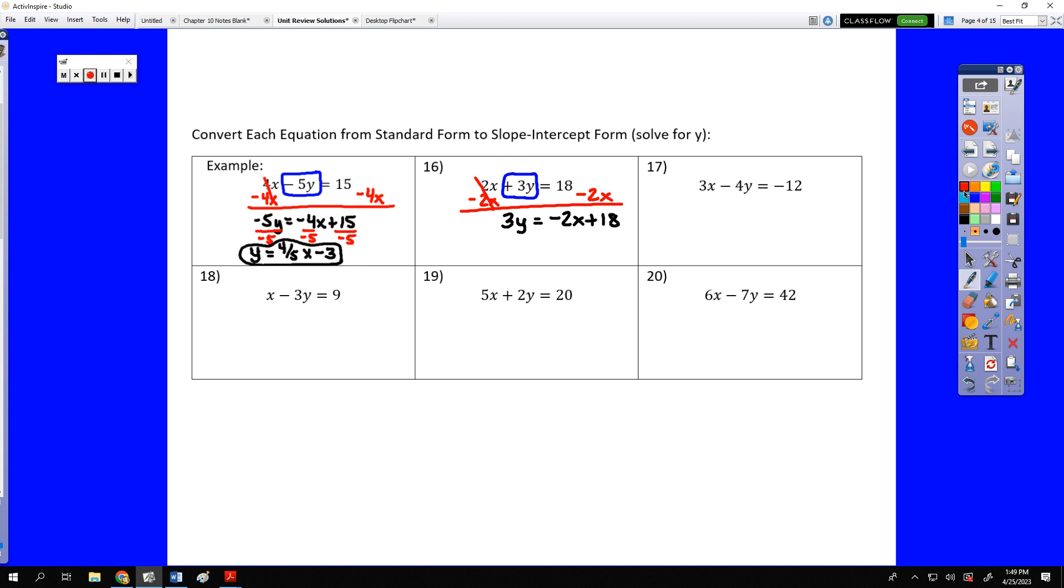Then to finish solving for y, we need to divide by 3. Whatever we do to that term, we must do to every term, leaving us with y equals negative 2 thirds x plus 6 as our answer.